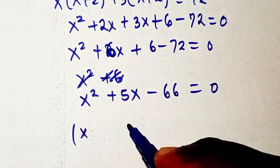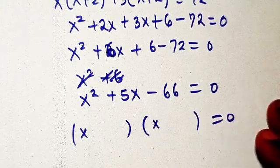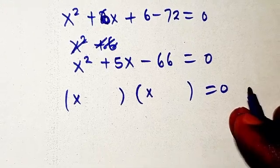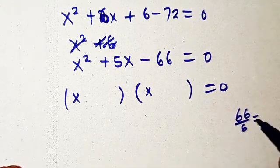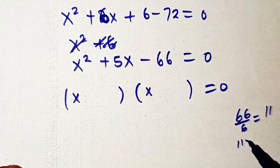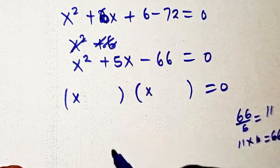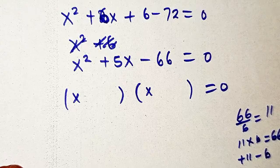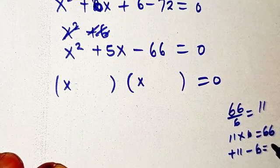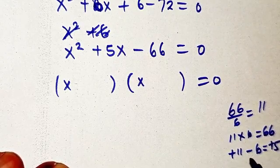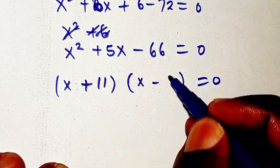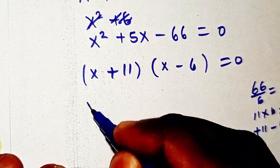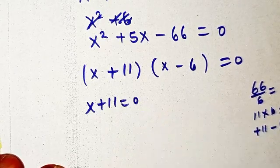Now we need to factorize this. We look for two factors of 66 that when added give 5. For instance, 11 times 6 equals 66, and plus 11 minus 6 gives plus 5. So we use plus 11 and minus 6, giving us x plus 11 times x minus 6 equals zero.